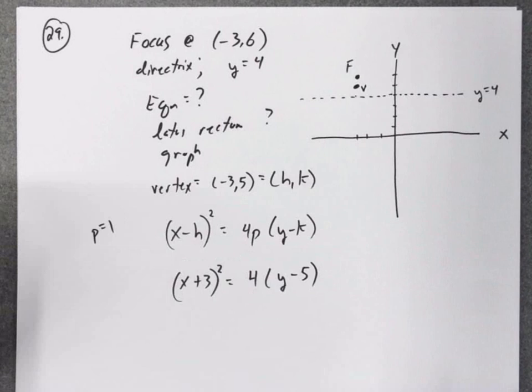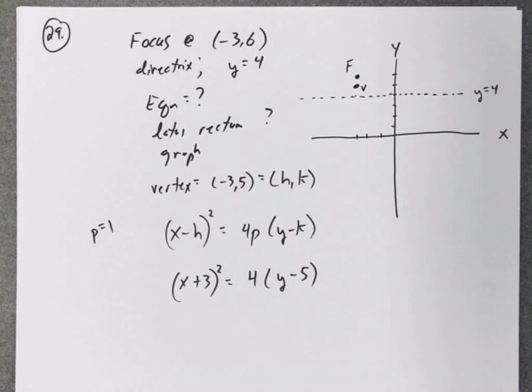So then y minus k, and k is 5. Now we have to check and make sure, since this parabola opens up, we have to make sure the 4 is positive, and it is.